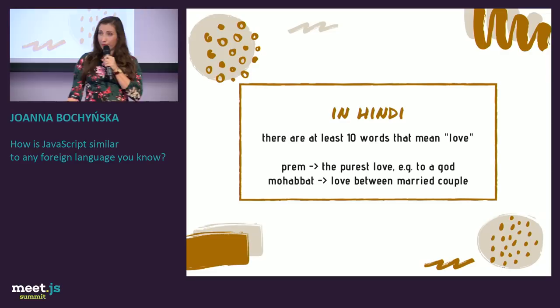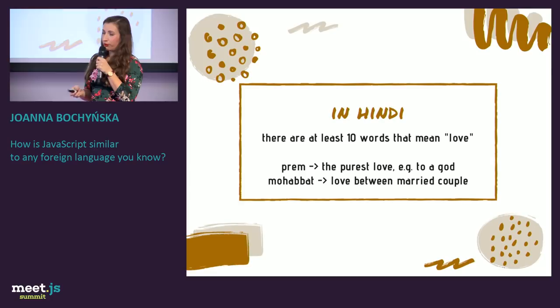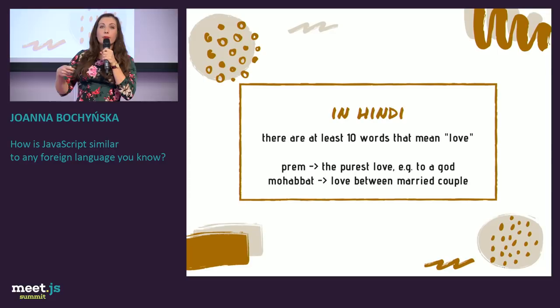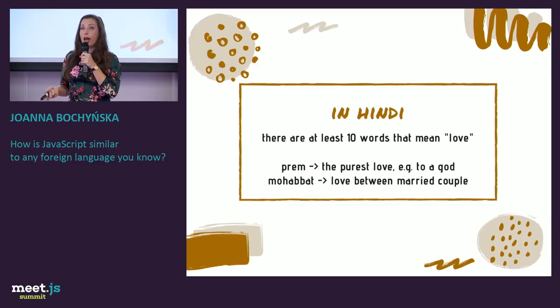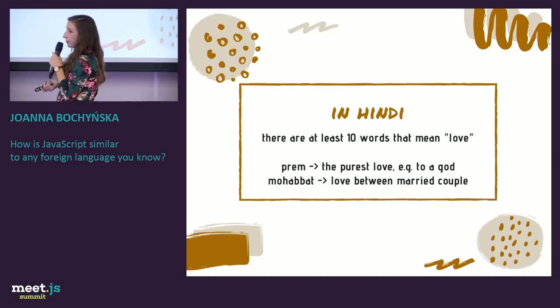Speaking about love at a JavaScript conference seemed like a good idea. There are at least 10 words in Hindi meaning 'love' — I chose just two. 'Prem' comes from Sanskrit and means the purest love, such as love for a god. It is used in poems, poetry, and literature — you wouldn't use it in real life. But if you check 'prem' in the dictionary, it translates as 'love.'